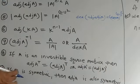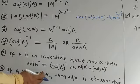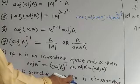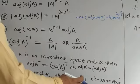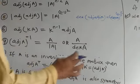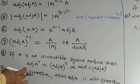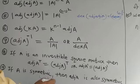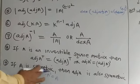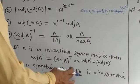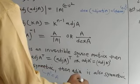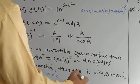If A is a symmetric matrix, then Adjoint A is also symmetric. Symmetric matrix means A transpose equals A. If A is a symmetric matrix, then Adjoint A is also symmetric.